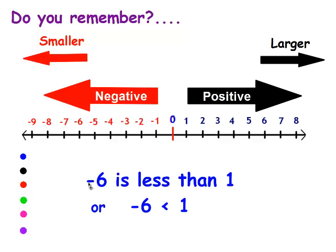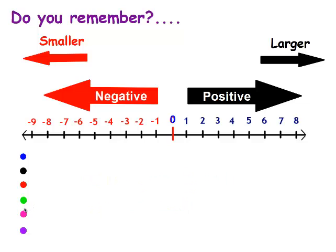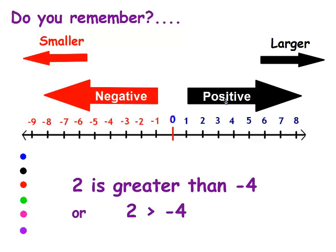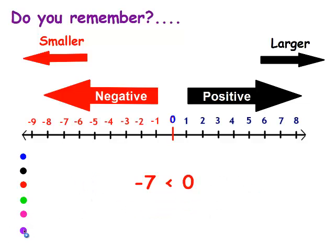Let's look at this. Negative 6 is less than 1 — that's true. A negative is always smaller than a positive number, and it's to the left on the number line, so yes, it is less than 1. And 2 is greater than negative 4. 2 is a positive number, so it's going to be greater than a negative number, and it's farther to the right on the number line, which makes it larger. And negative 7 is less than 0 — that's true. Negative 7 is farther to the left on the number line.